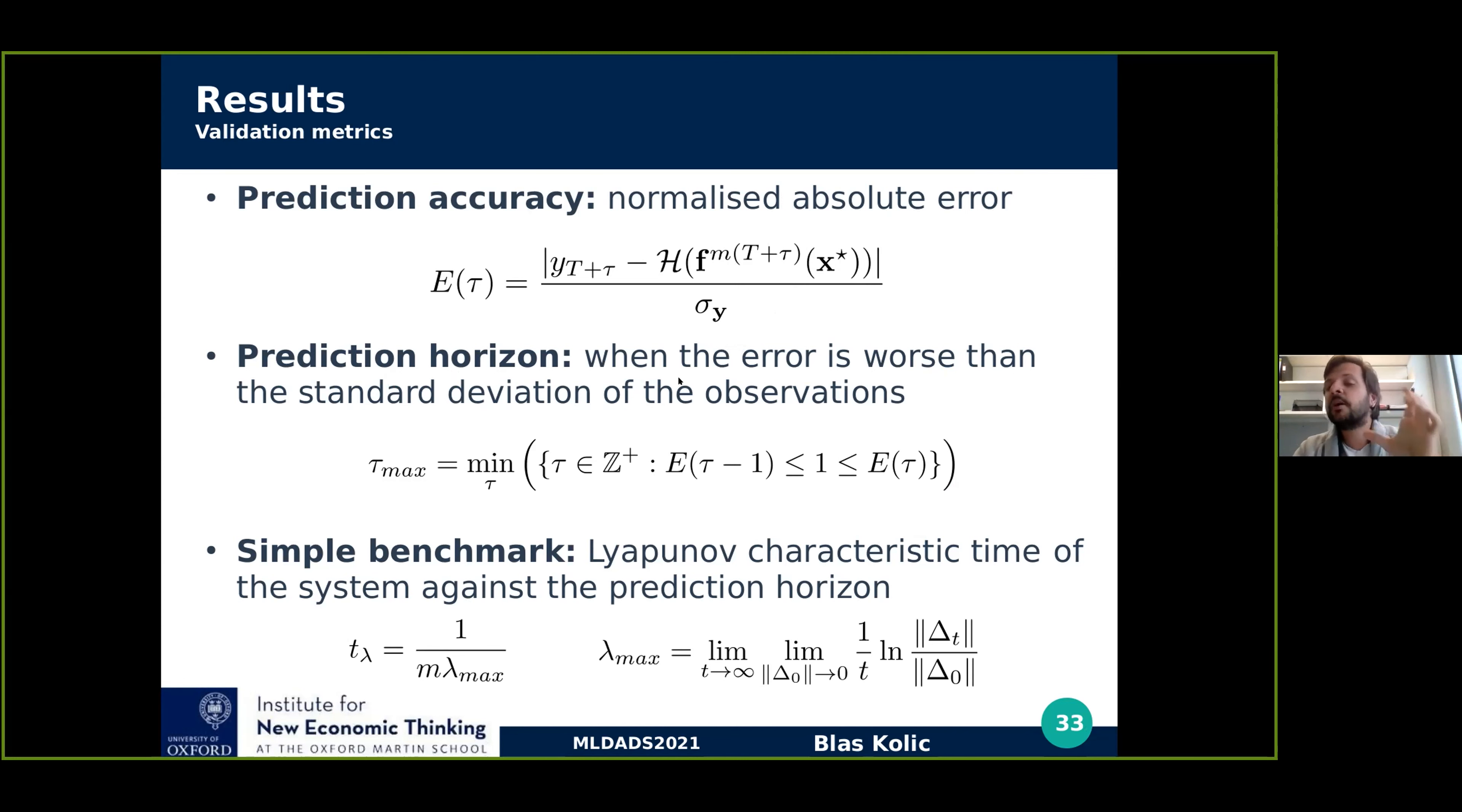That's how we define our second measure of validation, which is the prediction horizon, which is on average, after doing many experiments, the point in which the error gets worse than the standard deviation of observation, meaning when this quantity is greater than the standard deviation of the data. So by defining this quantity, tau max is going to be the prediction horizon of the system, given our initialized microstates. And we can benchmark that with some property of the system. A simple benchmark is taking the Lyapunov characteristic time of the system. So we compute the maximum Lyapunov exponent of the system, take its inverse and make the right unit transformation. This is a rough estimate of the predictability of the system to which we benchmark with.